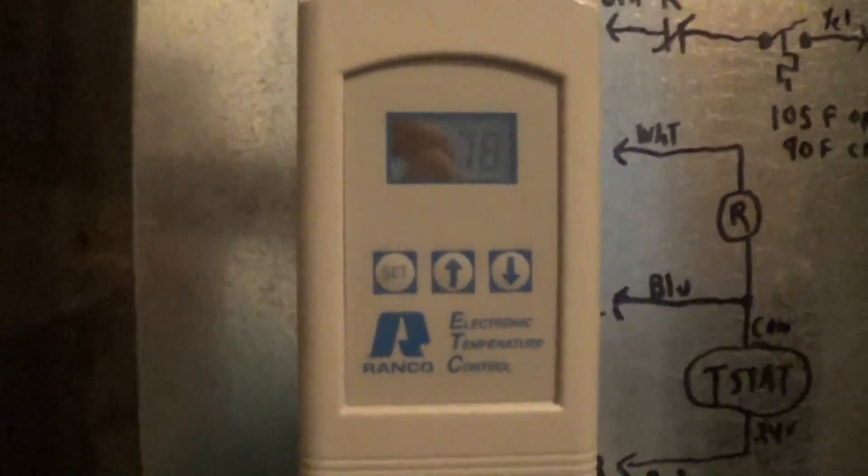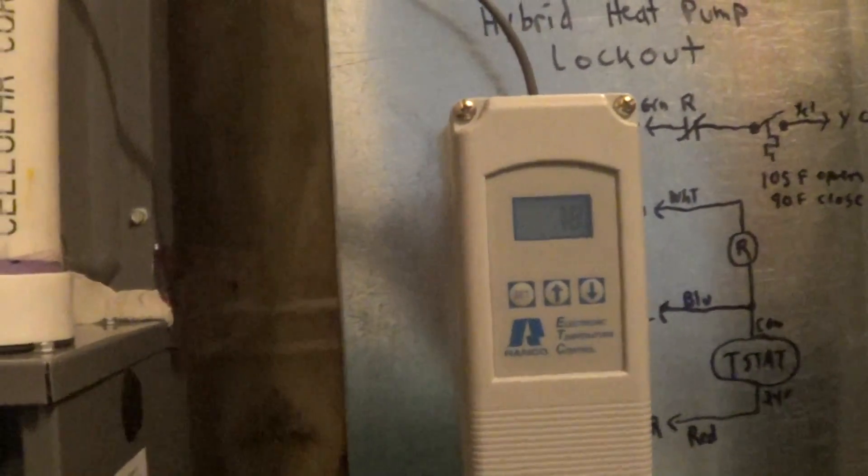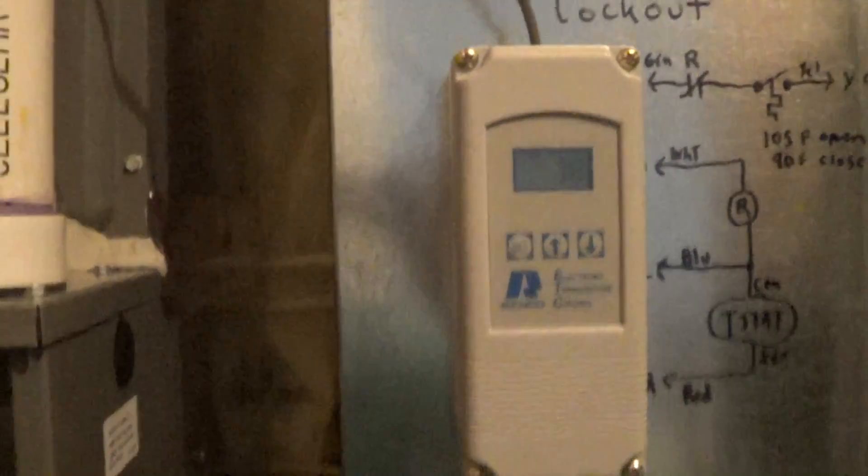All right, now we're running heat pump. We got 78 degrees going into the evaporator. Let's switch over to stage two, which would be propane, and see what happens.